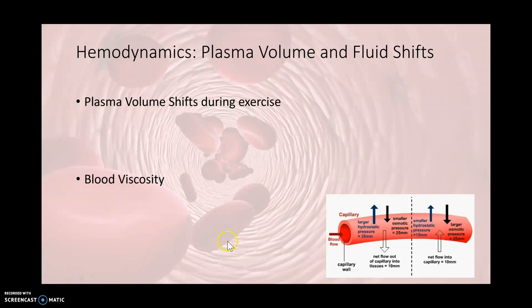The most costly activity the heart can do is generate tension. So if we generate tension more times per minute — meaning a higher heart rate or more cycles per minute — that creates myocardial strain. That's why we want a decreased heart rate at rest, or even a lower exercising heart rate due to training, because then we are putting less strain on the heart. The most costly activity the heart can do is generate tension, so we want to do that fewer times per minute.